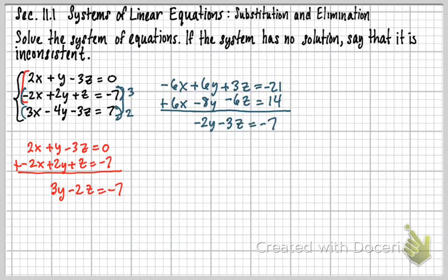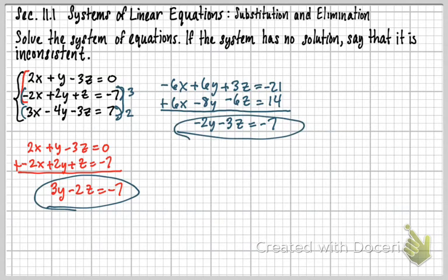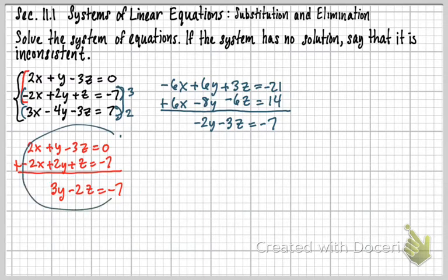The whole purpose of that second pair was to get rid of the x's again. Now look at what I have: two equations and two unknowns, and the unknowns are the same for both. I need to make sure that for both pairs I use, I'm eliminating the same variable — x in this case. Now I have equations in just y and z, and I can eliminate either one. I'll get rid of the y's.